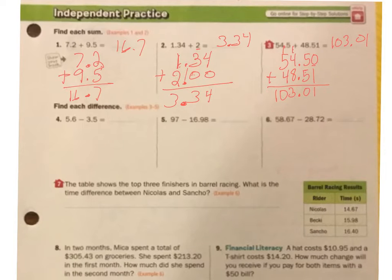That is finding the sum, or adding. Now it says find the difference. When you see the word difference, you're going to subtract. So 5.6 minus 3.5. Did I line up my decimals? I sure did. 6 minus 5 is 1, and 5 minus 3 is 2. So my answer is 2.1.